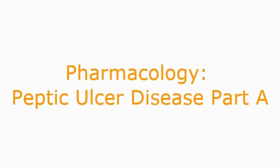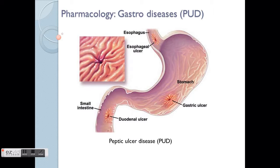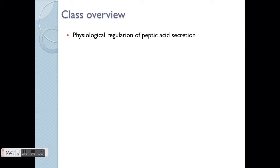Welcome to Pharmacology! In this section, we'll go through another gastrointestinal disease, which is PUD — peptic ulcer disease. Based on the diagram, the ulcer can also occur near the esophageal area or the duodenal area. As an overview, we'll first look through very briefly at the physiological regulation of peptic acid secretion in the stomach. This is Part A of the whole PUD class; later there'll be Part B and Part C to complete the whole story.